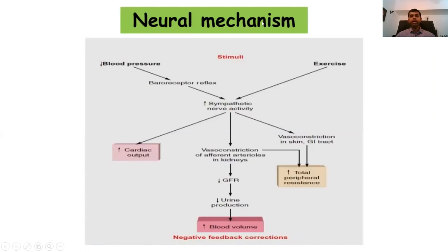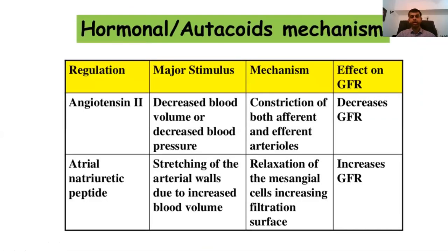Extrinsic mechanisms outside the kidney also govern urine output. For example, neural mechanisms: if blood pressure drops and there is reduced perfusion to the kidney, the sympathetic nervous system is stimulated, resulting in afferent arteriole vasoconstriction, reducing glomerular filtration. The body is not initially worried about maintaining GFR — it tries to maintain blood pressure — but as a result, GFR is low, which can result in oliguria.